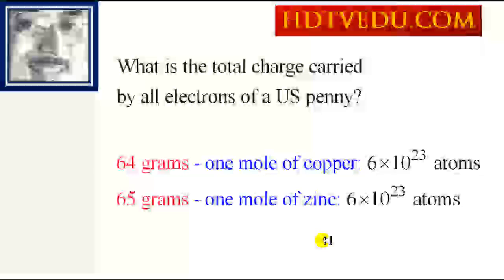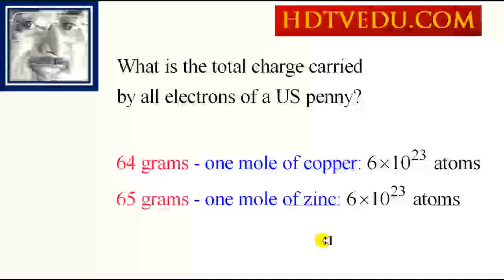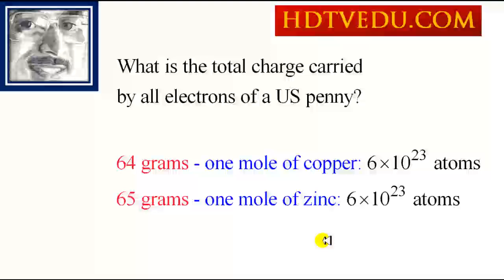What is the total charge carried by all electrons of a US penny? You know that one mole of copper is 64 grams and contains 6×10^23 atoms. One mole of zinc is 65 grams and contains 6×10^23 atoms.